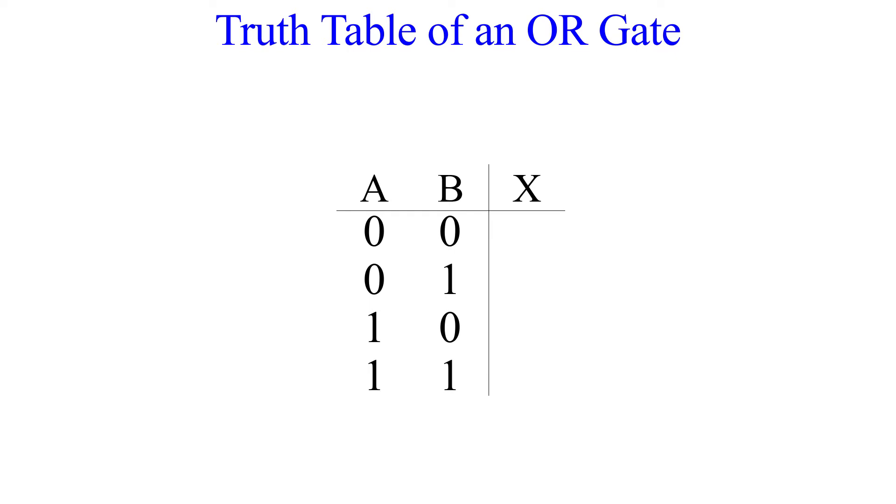Now we can determine the output for each of the given inputs. The first row has inputs of 0 and 0, so the output is 0. The next row is 0 and 1, so the output is 1. The third row is 1 and 0, so the output is 1. And the fourth row is 1 and 1, so the output is 1. So here is the truth table for the two input OR gate.